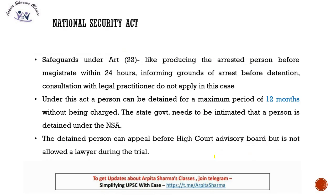Now let us see some more provisions of NSA. Under Article 22 of the Constitution, in normal detention the safeguards available to a person include: the reason of arrest must be told, the person must be produced before a magistrate within 24 hours, and the arrested person has the right to consult a legal practitioner. However, these safeguards under Article 22 against arrest do not apply to preventive detention — this is written in the Constitution itself. And under NSA, if a person is arrested, these safeguards are also not available.